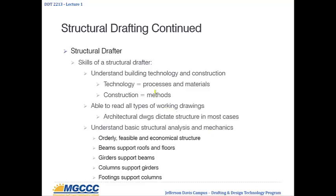As far as skills, understanding building technology and construction is a big one. The technology refers to the processes and materials that go into the actual building, and the construction refers to the methods — how are they going to do it? So staying up to date on current materials, processes to produce the materials, what materials can go together well, and different methods you might find to put together structural items — whether steel, wood, or concrete. You also want to be able to read all types of working drawings, especially architectural, because those are the ones you'll work most closely with and they're going to dictate your structure — where columns go, how high they need to be, how deep the beams need to be.